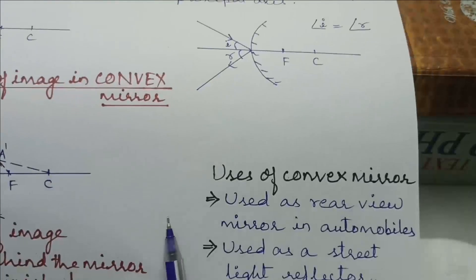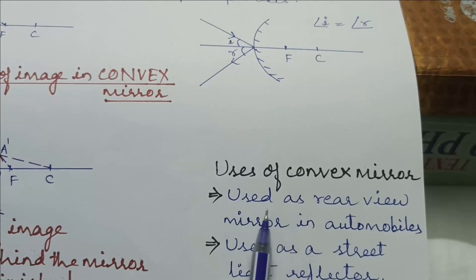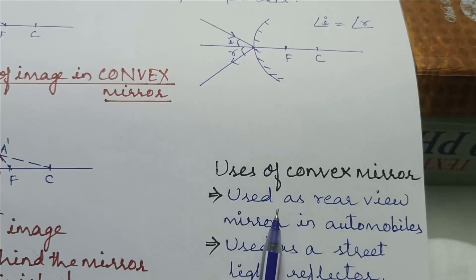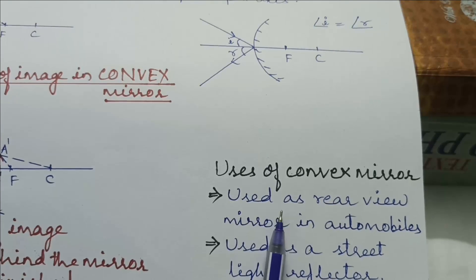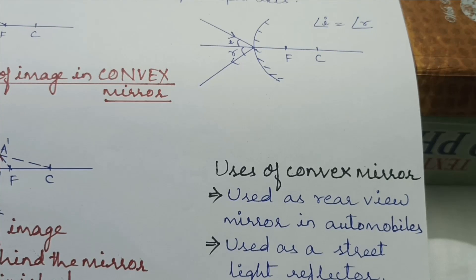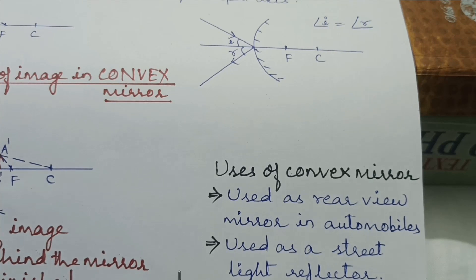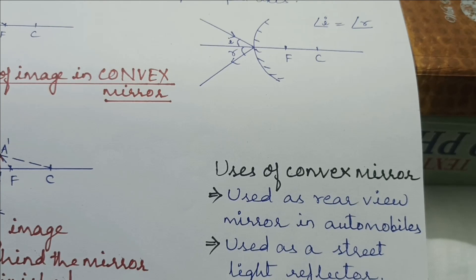Uses of convex mirror: Due to the properties of image formed by convex mirror — virtual, erect, and diminished — it is used as a rear view mirror in automobiles. It is also used as a street light reflector. This is all about image formation in case of plane and spherical mirror.